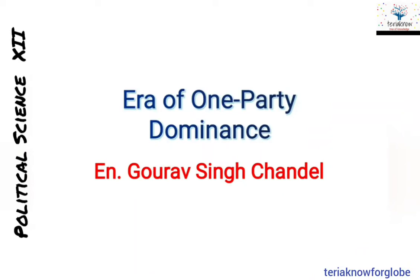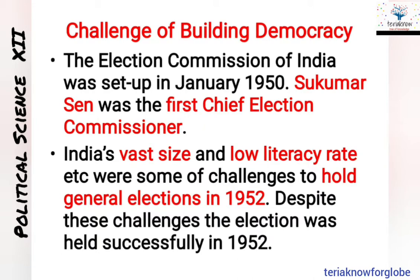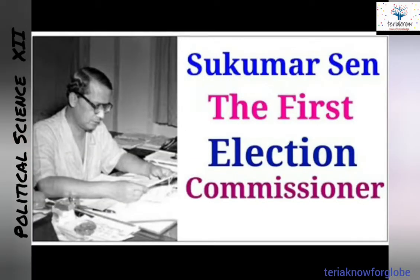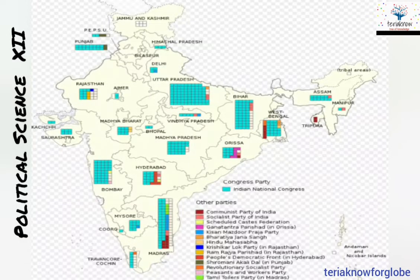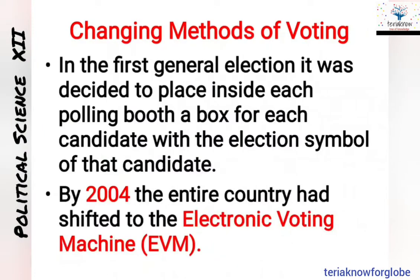Hello everyone, Gaurav Singh again welcomes you. Today we will study the era of one-party dominance, Part 2, continuing with the Socialist Party. In the first lecture of this chapter, we covered the challenges of building democracy, Sukumar Sen the first Election Commissioner, the Indian general election 1951 to 1952, the number of seats Congress got, and other parties that secured seats in the first general election.